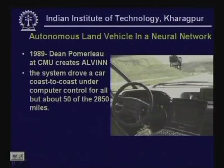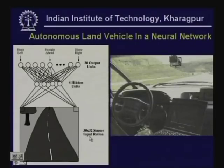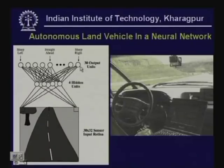The idea behind the car is quite simple. In front of the car is a camera which takes a picture of the road ahead. This image is captured into a 30 by 32 pixel image. These pixels are fed to a neural network computer which has four hidden units, and the output tells the processor which way to turn the wheel and the speed.